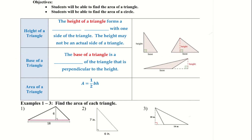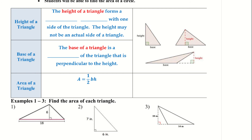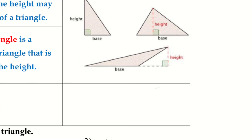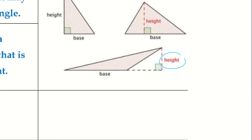Let's start with our triangle. The height of a triangle forms a right angle with one side of the triangle — the height may not be an actual side of the triangle. If you take a look over here, we can see the height is on the outside of the triangle, and that's okay, as long as we can figure out what the height is from where the base starts to the highest point.